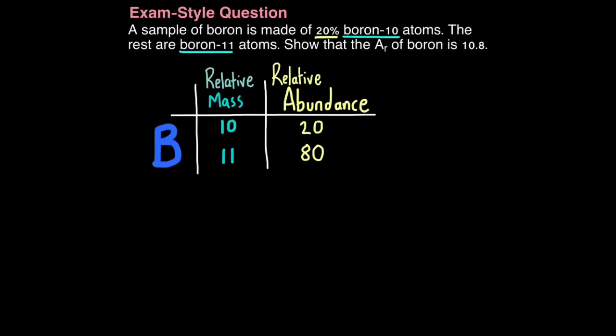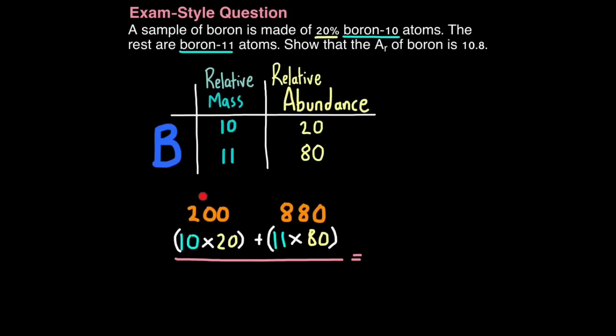Why not try pausing it and giving it a go first? So remember, the first step is multiplying the relative mass of each isotope by their relative abundance. So 10 times 20 and 11 times 80. That gives you two values, 200 here and 880 here. Next, you just add them together and that gives you a value of 1080. Then step three, you add the relative abundances together. So 20 plus 80, which obviously gives you a value of 100. And then you simply divide the top figure by the bottom figure. So 1080 divided by 100 gives boron a relative atomic mass of 10.8.